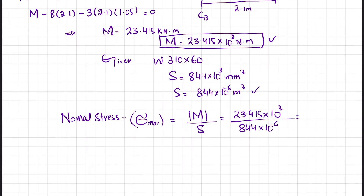Solving this gives 27.7×10⁶ Pa, so the maximum normal stress at section C is equal to 27.7 MPa.